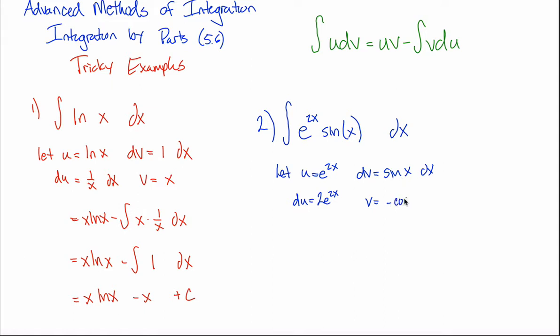Well, what function, when I take its derivative, gives me sine of x as the derivative? I think negative cosine would do the trick. And that's because... Oh, I forgot my dx over here. And that's because the derivative of cosine is negative sine. So I get negative negative sine, which is just the same as sine of x.